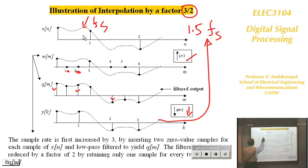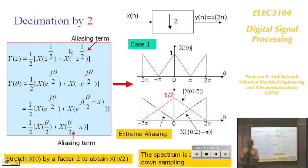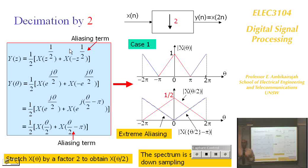In summary: upsampling, downsampling, decimation, and interpolation. Be careful with terminology — upsampling and downsampling alone mean changing the sampling rate without filters; decimation and interpolation mean you must include the appropriate filters. Decimation has the digital filter at the front; interpolation has the filter at the back.